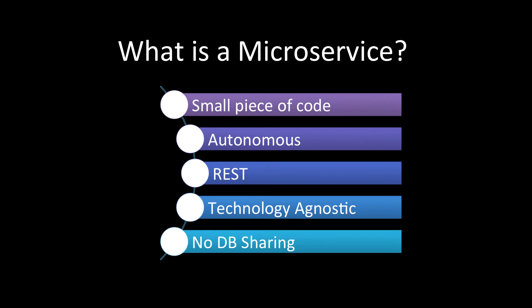Last but not least, ideally a microservice should not share the database with any other service. If we start sharing the database among multiple microservices, it will defeat the purpose of autonomous code that can be deployed independently. For example, if you want to add a new column in a table, you'd have to say this version can only be deployed when the other version of that service is also deployed — that's exactly what you don't want. So you want to keep the database within that microservice so that you can deploy it independently.